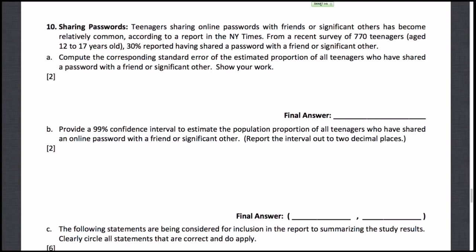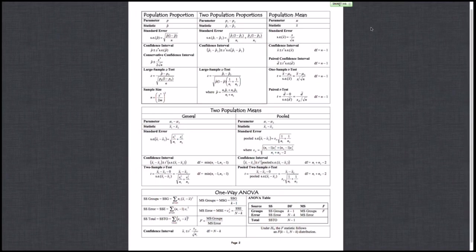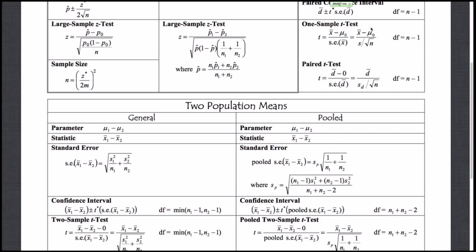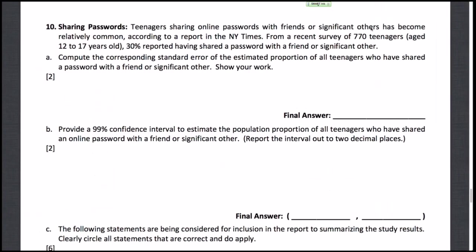We need to first compute the corresponding standard error of the estimated proportion of all teenagers who have shared a password with a friend or significant other. Let's look at the standard error equation — we can get that from page 2 of the formula card. We are in the population proportion section because we're working with one population proportion. Let's go ahead and use that to do the problem.